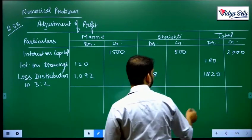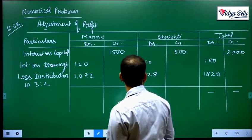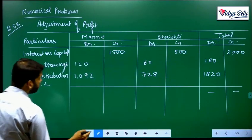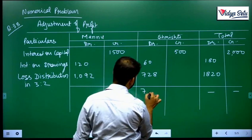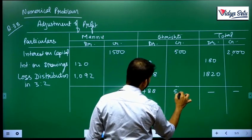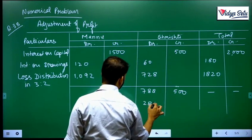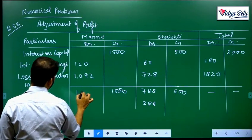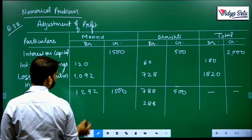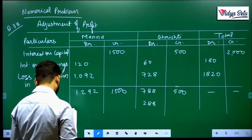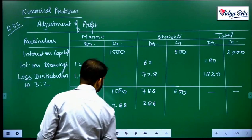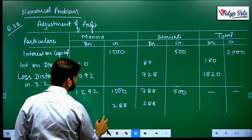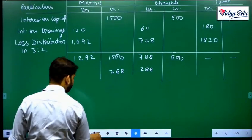Let us look at the difference. Here 728 plus 60 comes to 788, here it is 500. So 288 extra debit here. Here it is 1,500 and this is 1,292, so the difference is of 288.